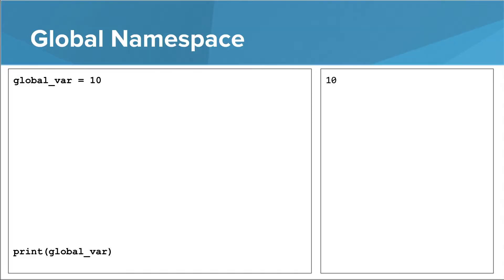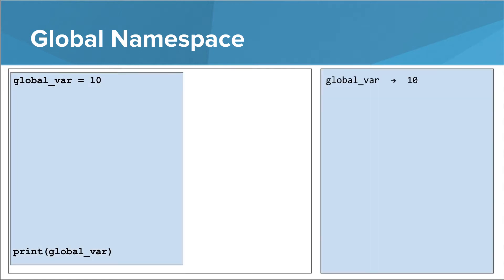First, we have the global namespace. This is the top-level namespace that contains all of the global names in your program. I'm going to color the global namespace blue. In this global namespace we have one name, global_var, mapped to the value 10. If we create another variable, other_var, set it equal to 20, we now have a new name in the global namespace, other_var, mapped to 20.